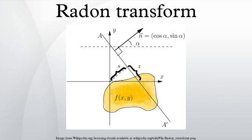Radon further included formulas for the transform in three dimensions, in which the integral is taken over planes. It was later generalized to higher-dimensional Euclidean spaces and more broadly in the context of integral geometry. The complex analogue of the Radon transform is known as the Penrose transform.